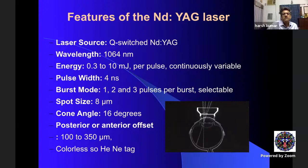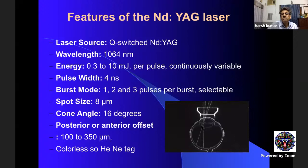The spot size is around 8 microns. There is a posterior or anterior offset: since the ND:YAG is colorless, we focus it with a helium-neon beam. In posterior capsulotomy we use a posterior focal shift so the laser fires posterior to where the beam is centered, avoiding lens damage. For anterior iris work, we use an anterior focal shift so the plasma formation affects only the targeted tissue.